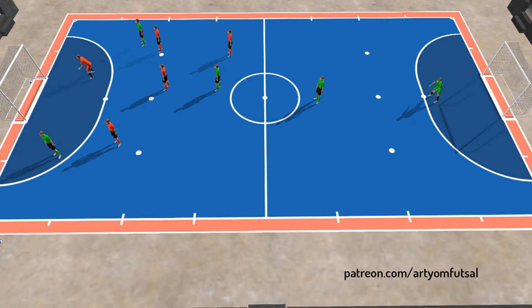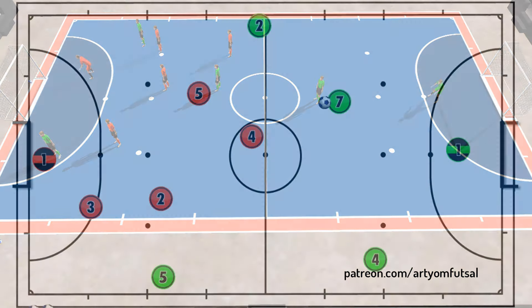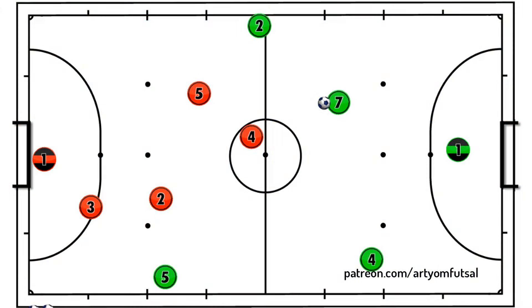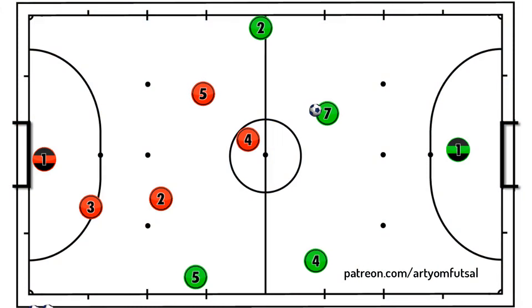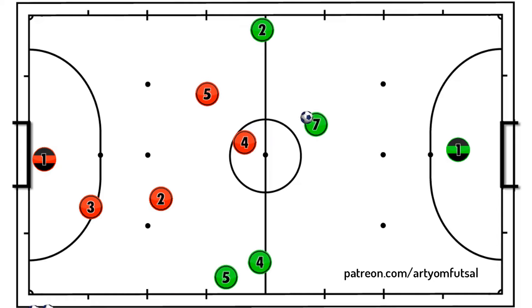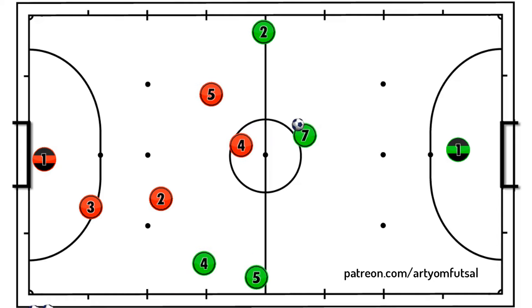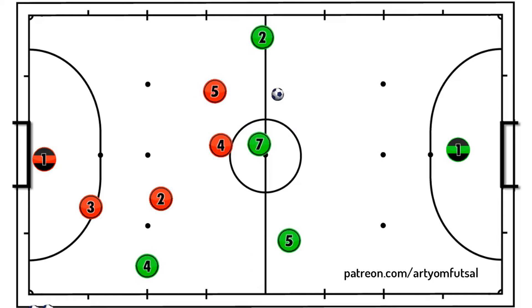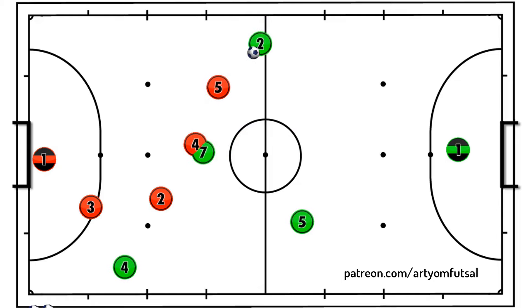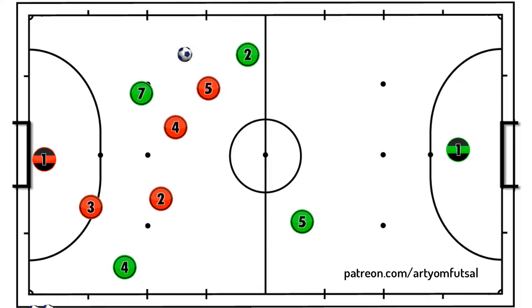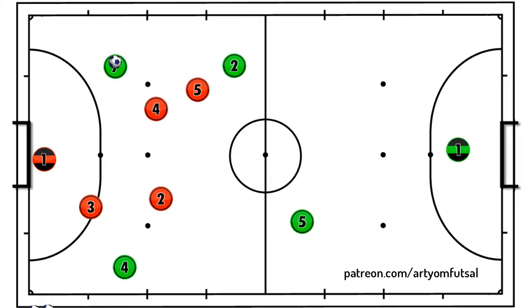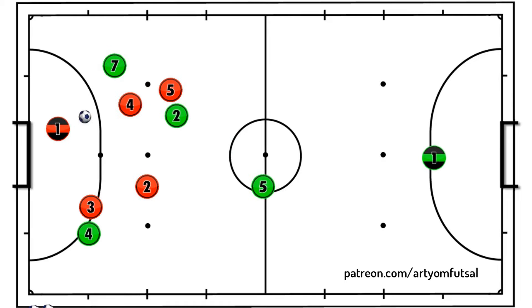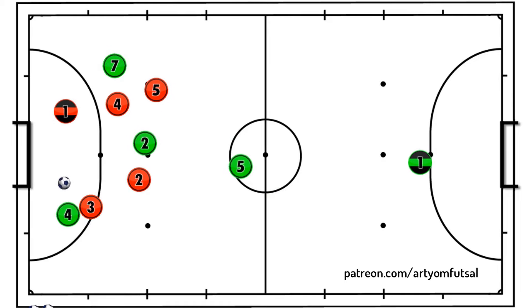Don't forget about parallels. This movement involves two players — one with the ball and another without. The run results in a pass down the same flank and a shot at goal toward the far post.